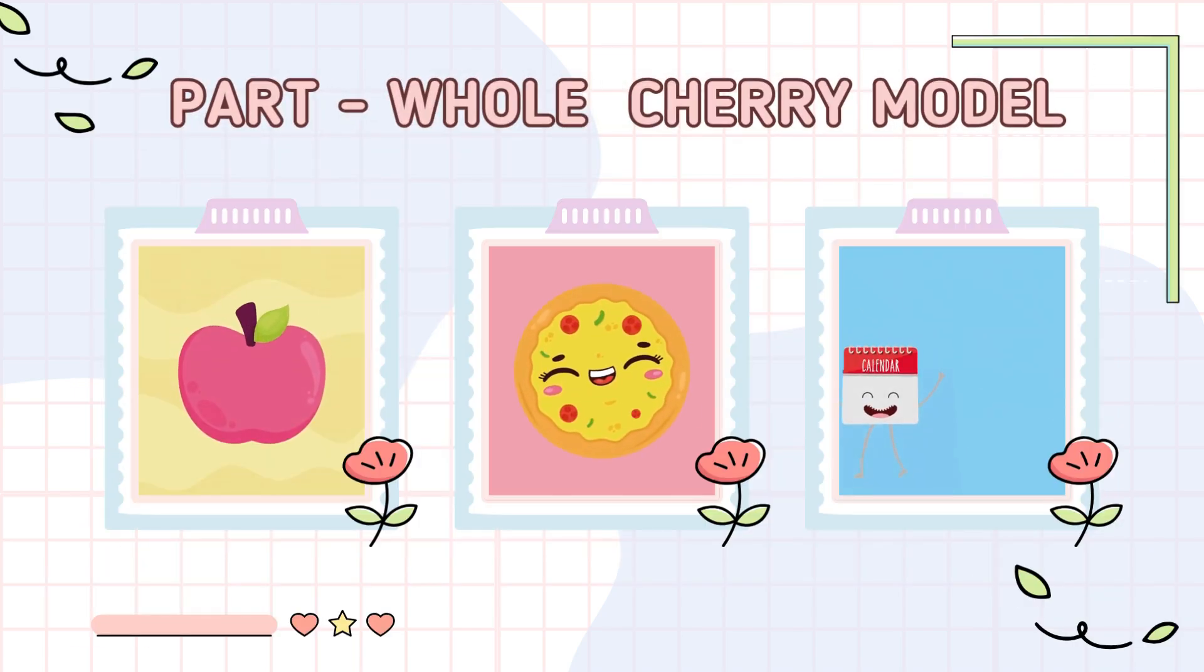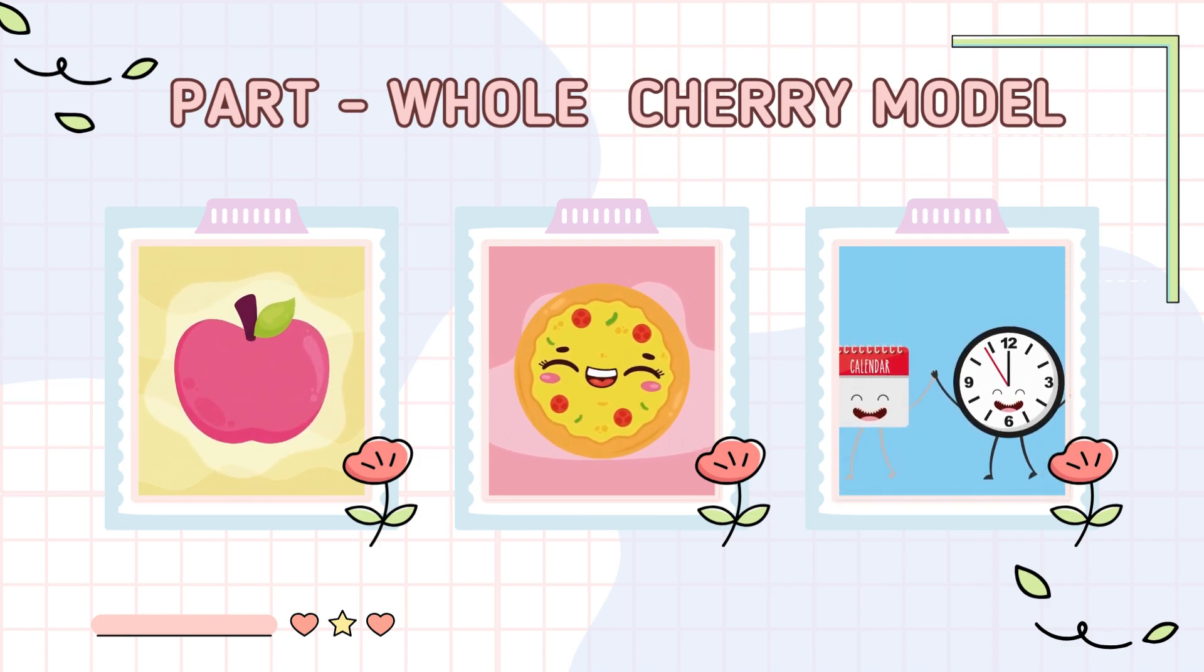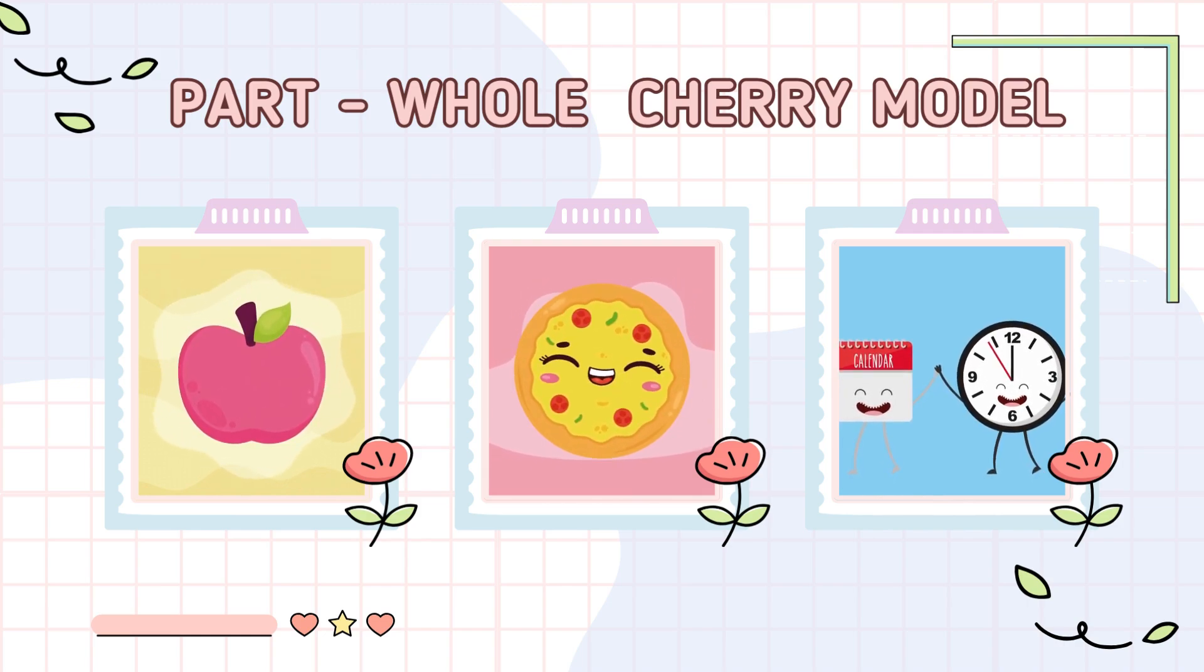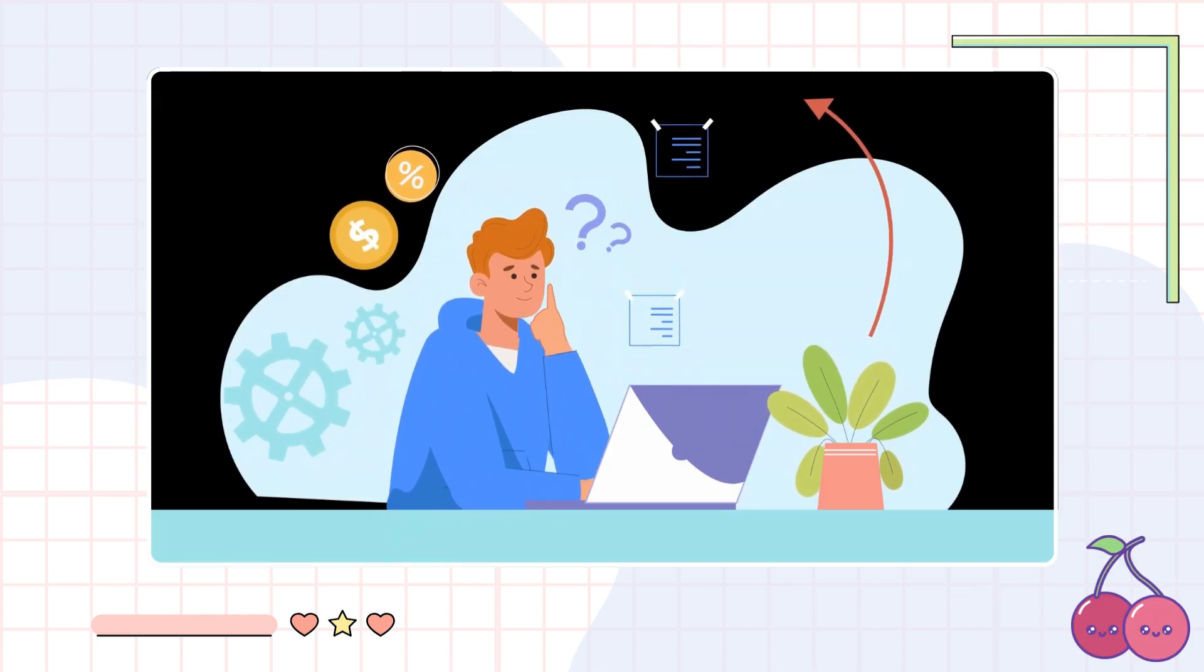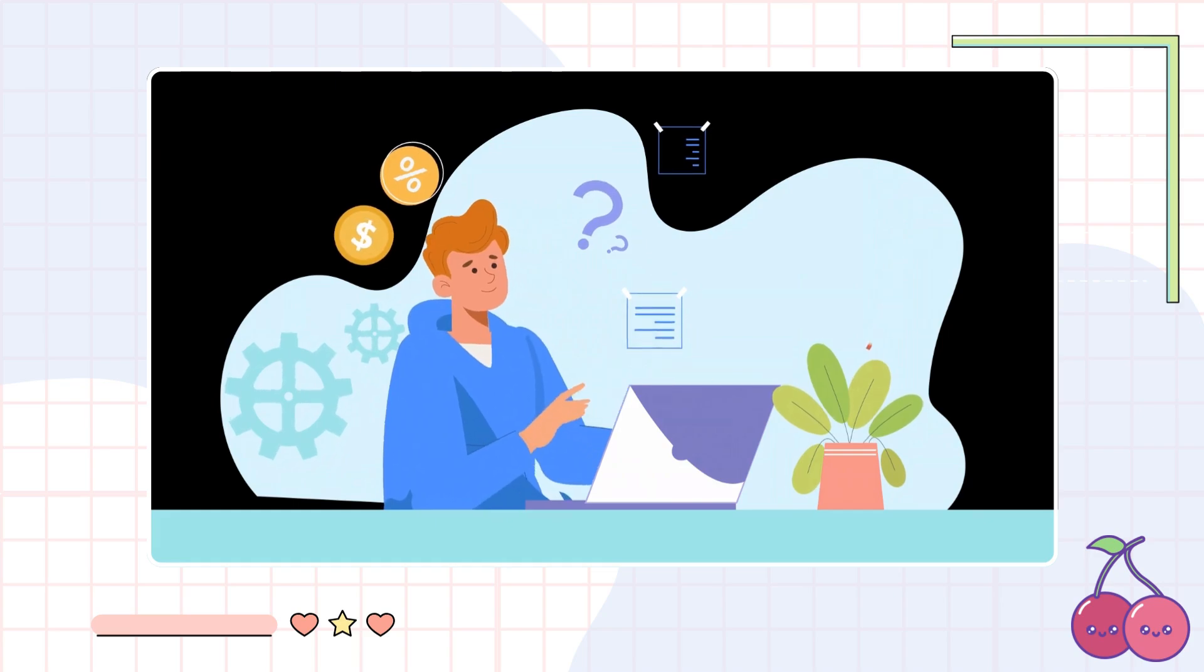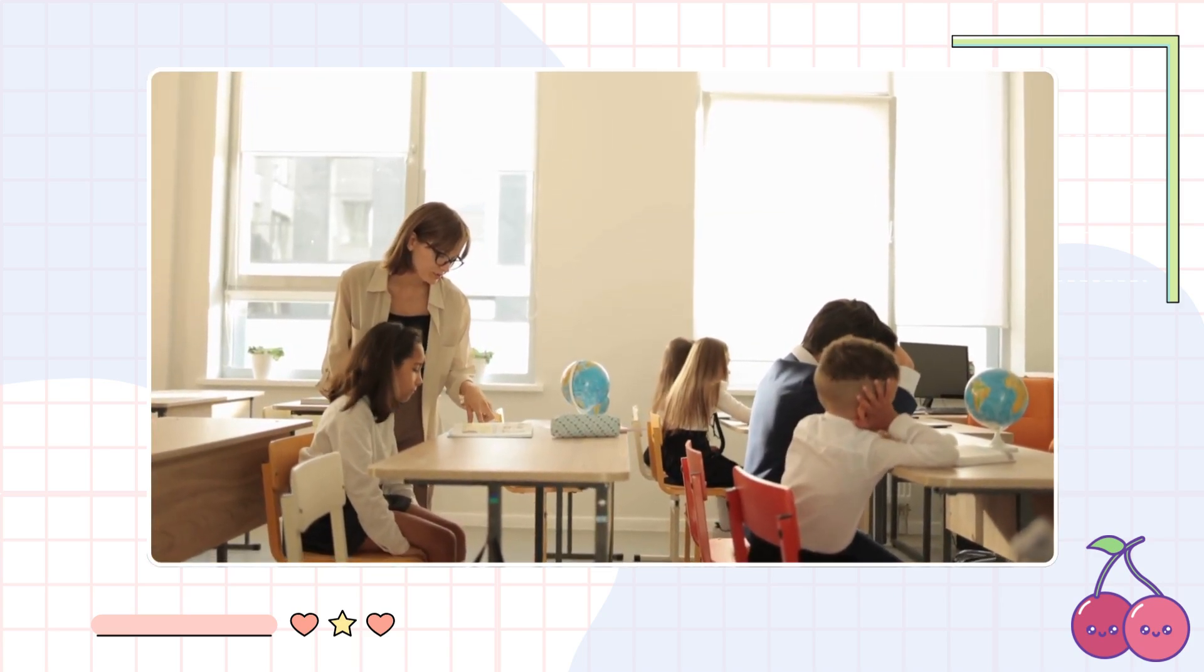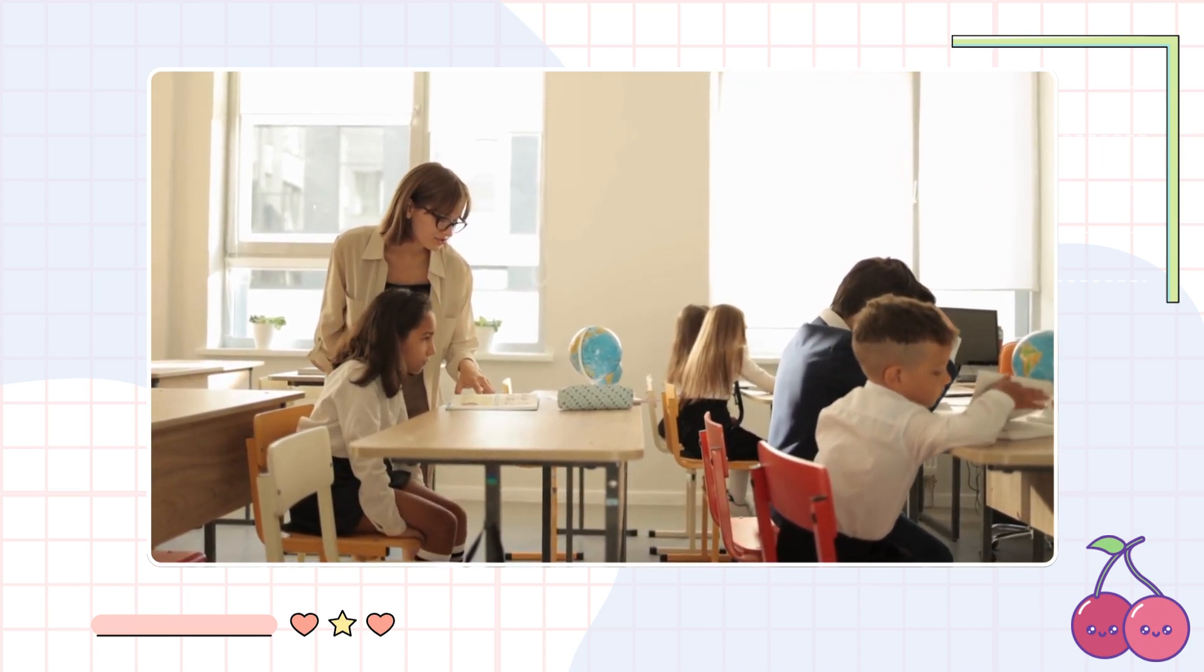As you can see, the part-part-whole cherry diagram helps us visualize that a whole can be composed of different parts. The parts might look different and be different sizes or shapes, but they form the whole group together. This cherry diagram is important because it allows us to break down complex problems into manageable parts. And don't forget to like, subscribe, and hit that notification bell so you won't miss out on more fun learning videos. See you next time!